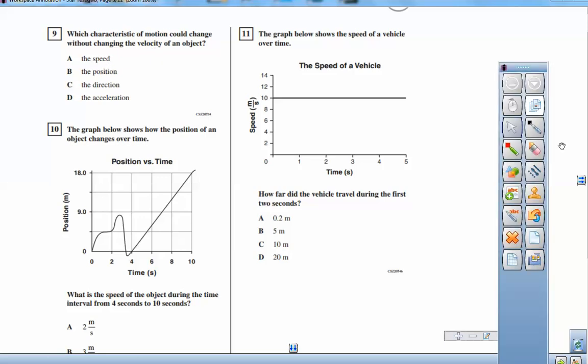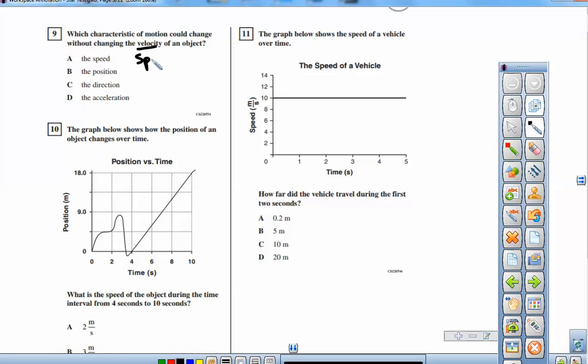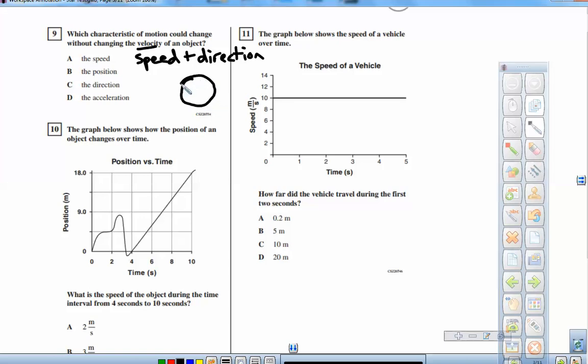Well, velocity is defined to be speed with direction. So if you're changing the speed, you would be changing the velocity. If you're changing direction, you'd be changing velocity, even if the speed is constant. So for example, motion in a circle at a constant speed is actually accelerating because it's constantly changing its direction, even if the speed is constant.